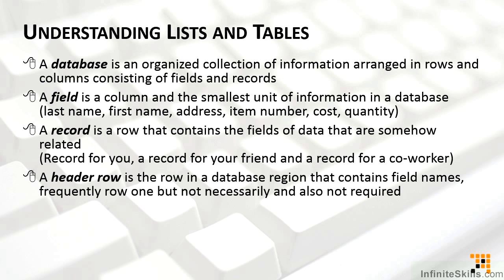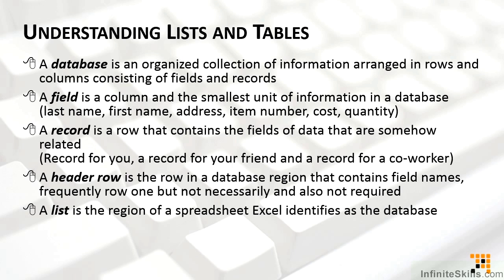There is a special kind of row called a header row — the row in a database, list, or table that has the names of the fields. There's nothing special about these cells; they're just text, and frequently it's row 1 but doesn't have to be. Technically, a header row is not required, but if you've ever tried to look at unlabeled data, you wonder which column is which — so you should always have a header row.